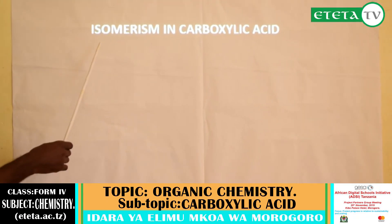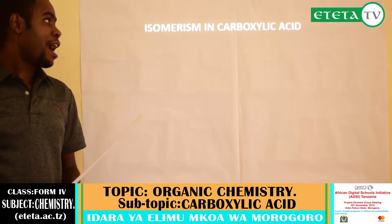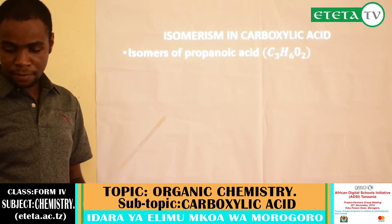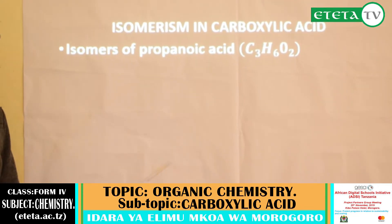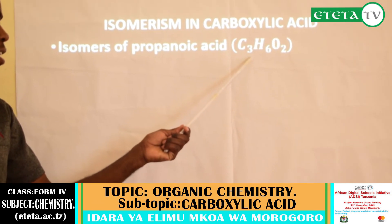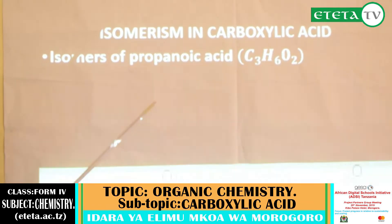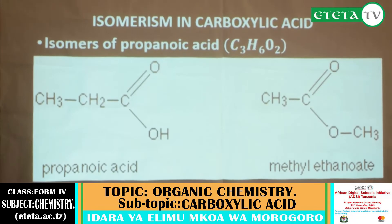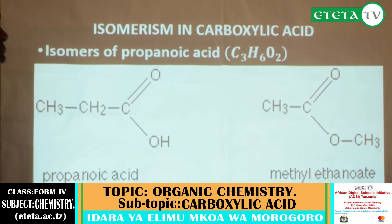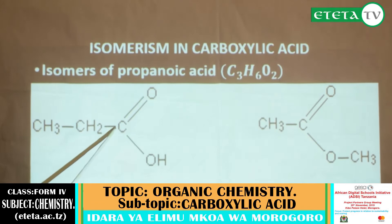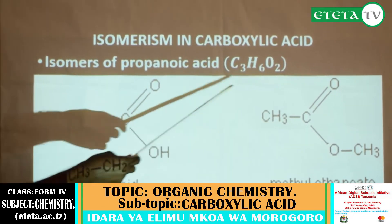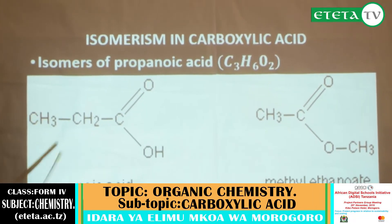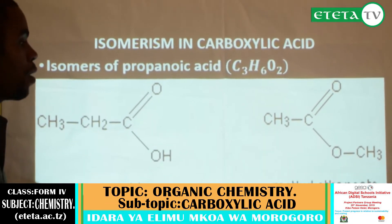Now let us discuss isomerism in carboxylic acid. The molecular formula for propanoic acid is C3H6O2. The isomers of propanoic acid: the first is propanoic acid itself — 1, 2, 3 carbons. The second is methyl ethanoate, which is an ester. Counting atoms for both: carbon is 3, hydrogen is 6, oxygen is 2 for all — this shows that propanoic acid is an isomer of methyl ethanoate.